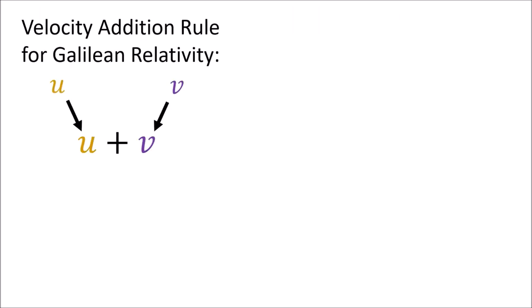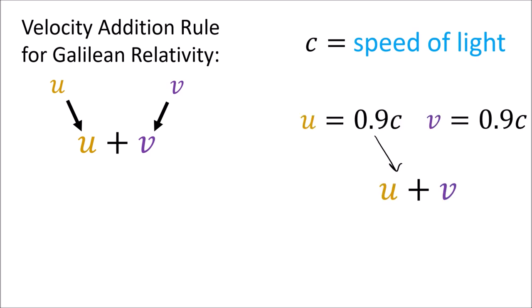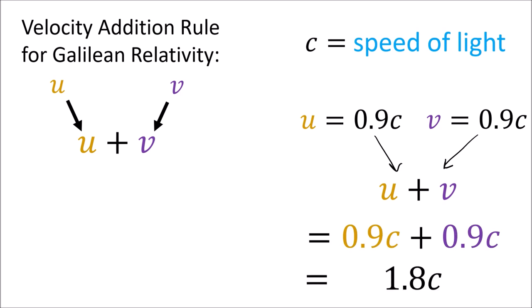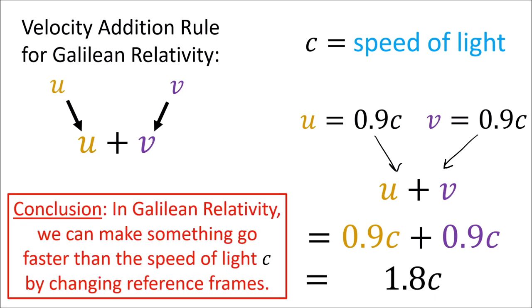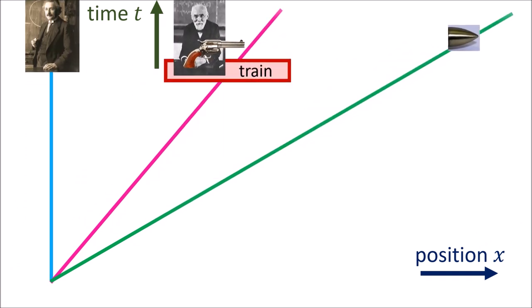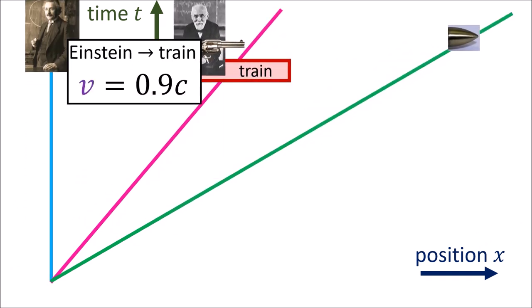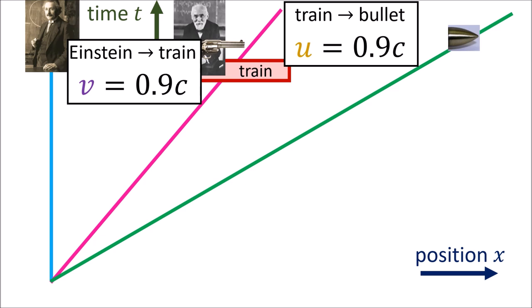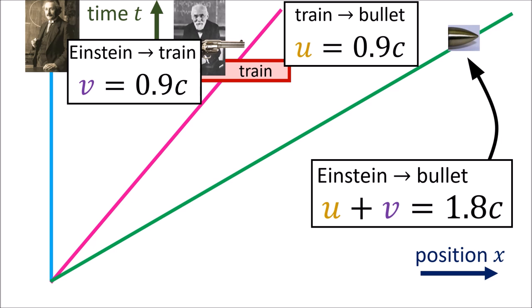With this Galilean rule for velocity addition, 0.9c added with 0.9c gives us 1.8c — 1.8 times the speed of light. This means that in Galilean relativity, we can make something appear to go faster than light just by changing reference frames. So when Einstein sees Lorentz going at 90% the speed of light, and Lorentz fires a bullet going 90% the speed of light relative to the train, Einstein sees the bullet going 180% the speed of light.